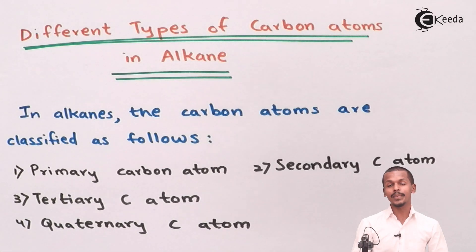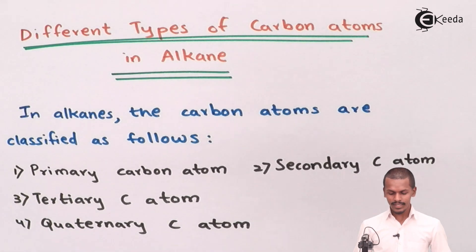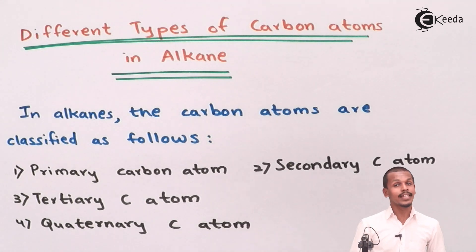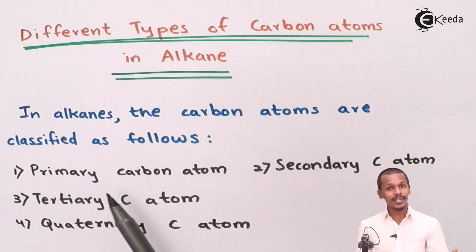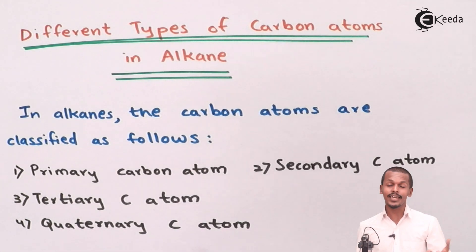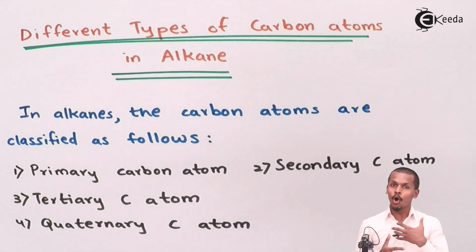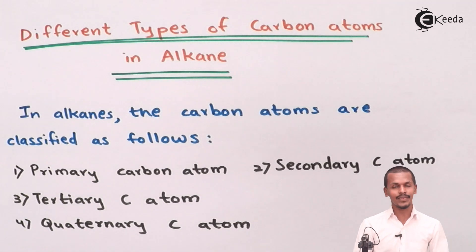We are going to discuss about the different types of carbon atoms in alkanes. Basically there are 4 types of carbon atoms that we could see in alkanes: primary carbon atom, secondary carbon atom, tertiary carbon atom, and quaternary carbon atom. It is not necessary that we will observe all types — it depends on the alkane we are talking about.